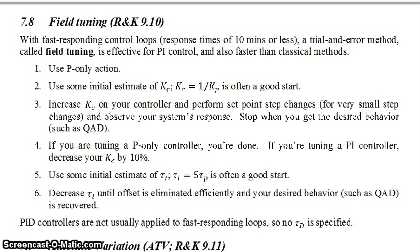If you're out in the field and you have a system that responds very quickly, response times on the order of 10 minutes or less, you can use this trial and error method called field tuning. This is effective for PI control and faster than the two previous methods we talked about. It's faster than Ziegler-Nichols. Cohen and Kuhn is fine as long as you have a first order plus dead time model.